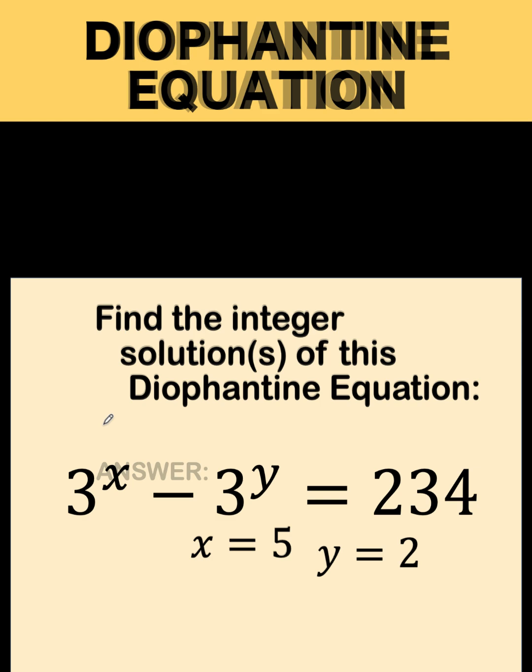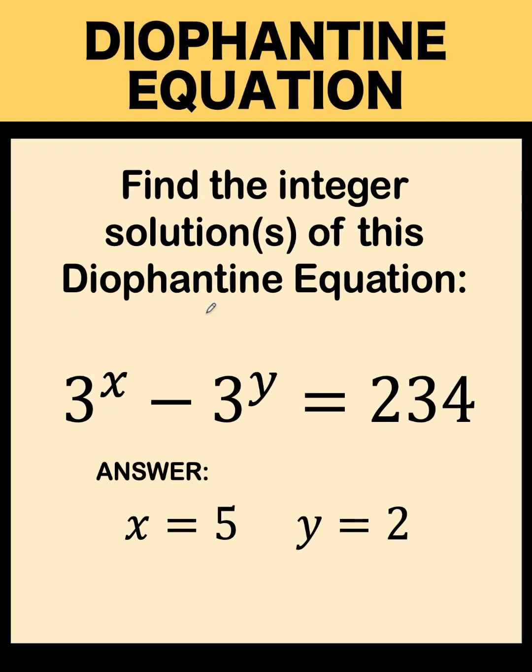we found that the answer to this Diophantine equation is the ordered pair x, y equals 5, 2.